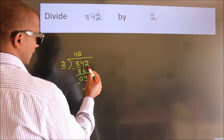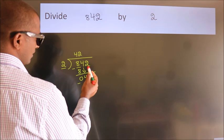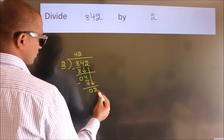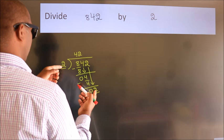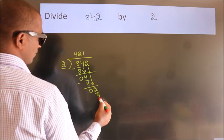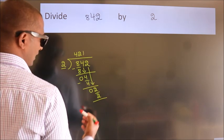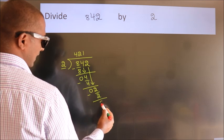After this, bring down the beside number. So, 2 down. When do we get 2? In 2 table, 2 1s, 2. Now, we subtract. We get 0.